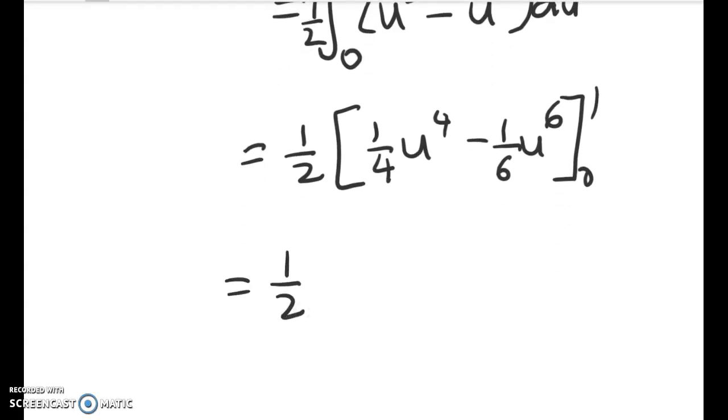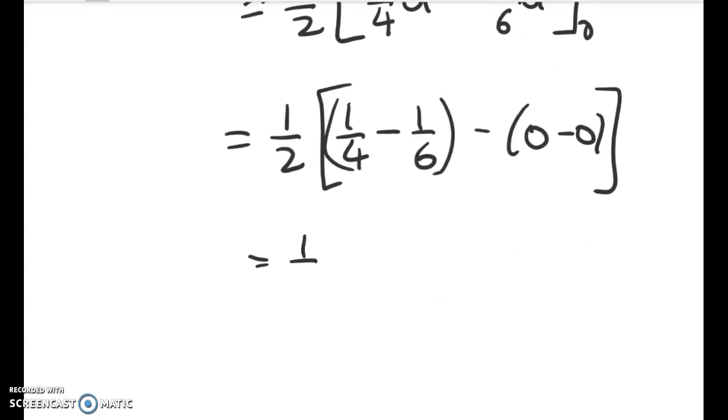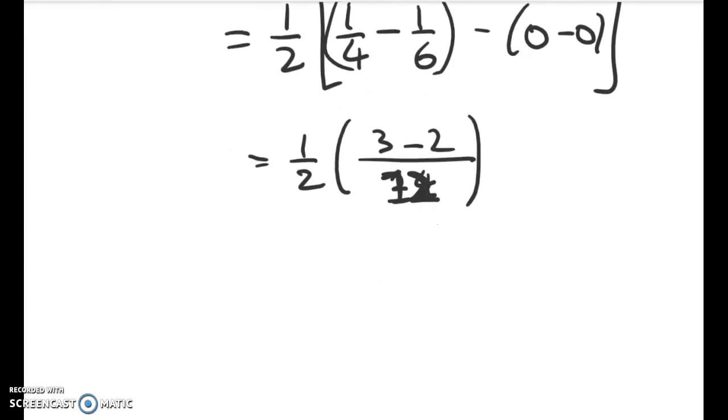Now we just work out what all of that is. So it's 1 half times 1 quarter minus 1 sixth minus 0 minus 0, which gives me a half times, I don't need 24, do I need 12 as my common denominator? So 3 minus 2. That gives me a final answer for a of 1 over 24. And that's the hard part of the question done.